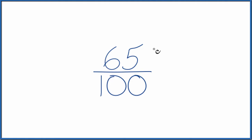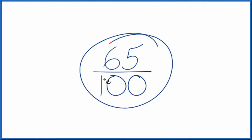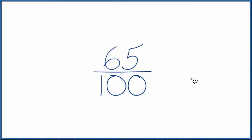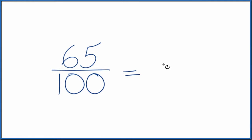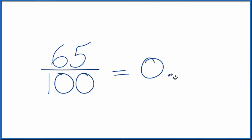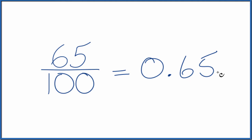Let's write the fraction 65 one-hundredths as a decimal. There are two ways we could do it. First, you could just divide 65 by 100 on your calculator, or you could do it longhand. You'd end up with 0.65. So the fraction 65 over 100 equals the decimal 0.65.